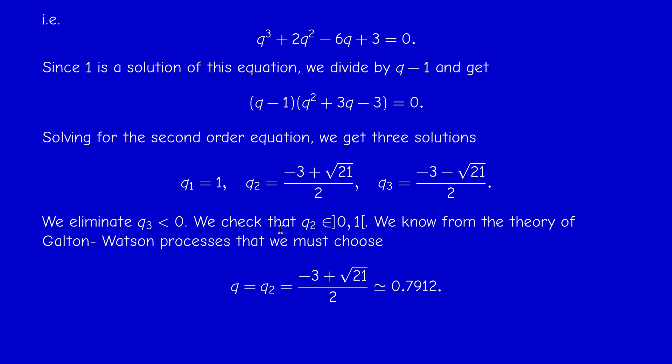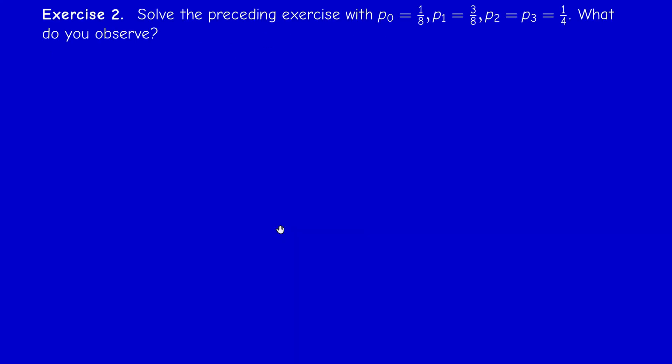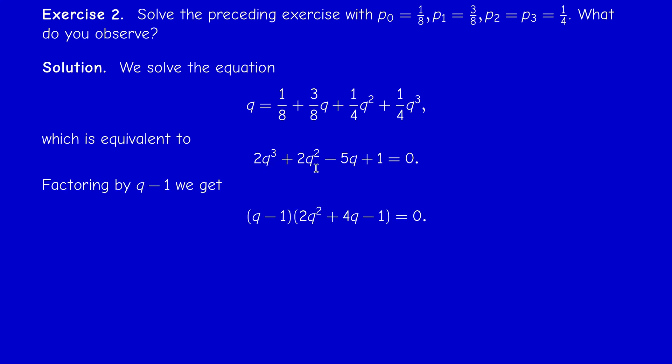Now second exercise, same thing but with different probabilities. Instead of 3 over 8 I have 1 over 8, and I change the other values. Same thing, we now have to solve this equation. After rearranging we get this polynomial and we as usually divide by q minus one, so we get this solution.